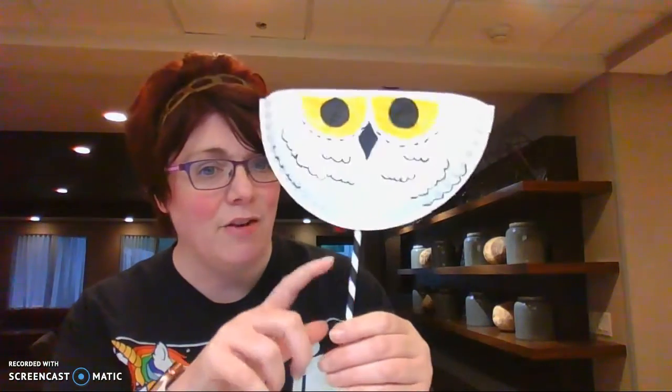Then you need a straw or a popsicle stick, or you could find a stick outside if you wanted to, and that will be the little handle you use to hold your Hedwig puppet. And then on the back, you need some tape or glue to attach your straw or handle to the back. Then you need yellow and black crayons, markers, or colored pencils. Let's get started.